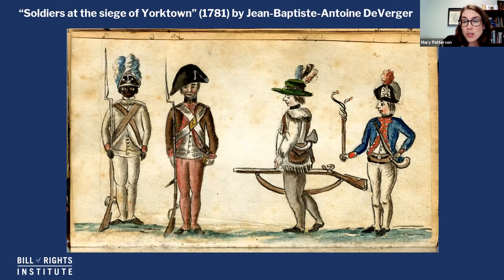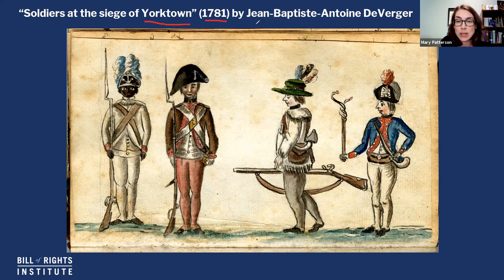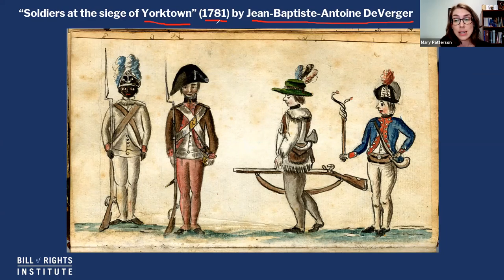Here is our image that we're using as our starting point to think about the roles that African Americans played in the American Revolution. As with a text that's a primary source, the title can actually give you a lot of clues as to what's going on. The title of our image is 'Soldiers at the Siege of Yorktown,' from 1781, and it's by this Frenchman, Jean-Baptiste Antoine de Berger. Just from the title, I can see that this is Yorktown in 1781.